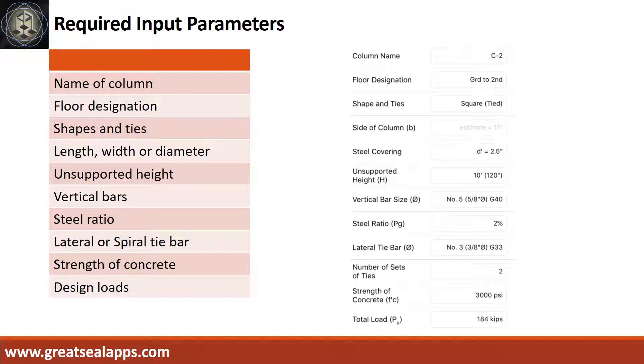Steel ratio: 2%. Lateral tie bars: 3/8-inch diameter at grade 33. Strength of concrete: 3000 PSI. And total load: 184 kips.